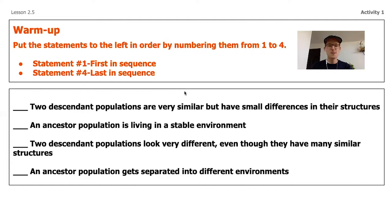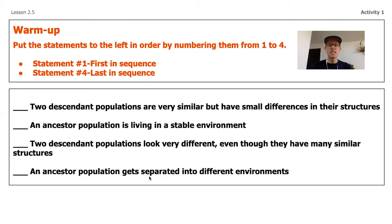Here are the four statements: First — two descendant populations are very similar but have small differences in their structures. Second — an ancestor population is living in a stable environment. Third — two descendant populations look very different even though they have many similar structures. Fourth — an ancestor population gets separated into different environments. These four statements are currently not in the order that they happen for an organism in its evolutionary process.